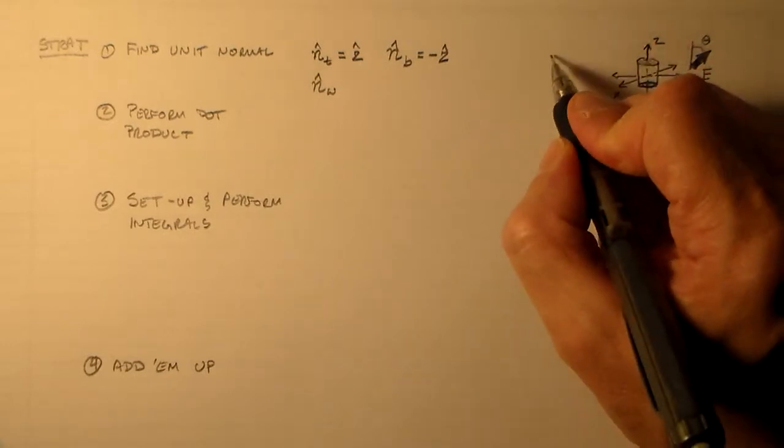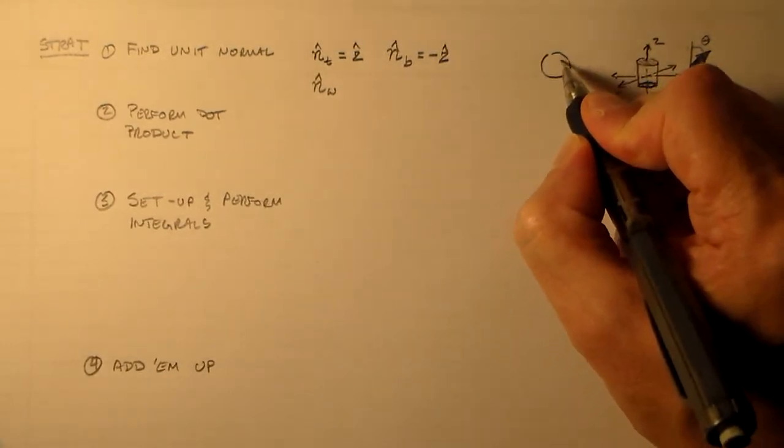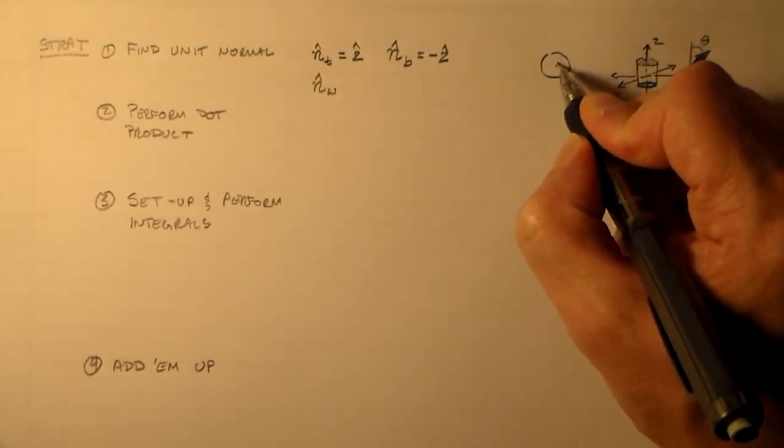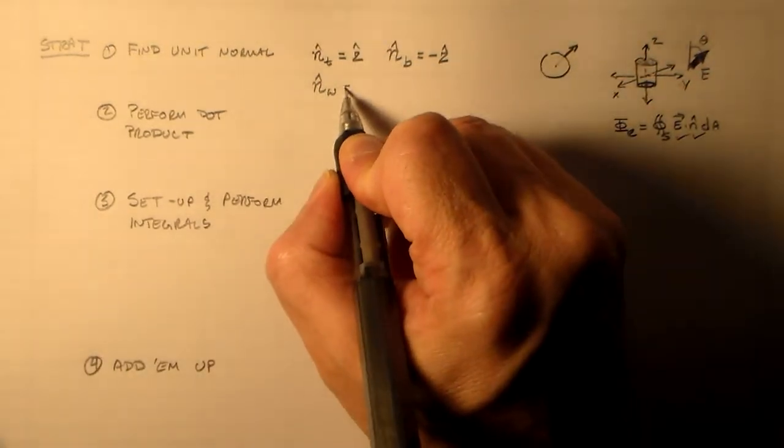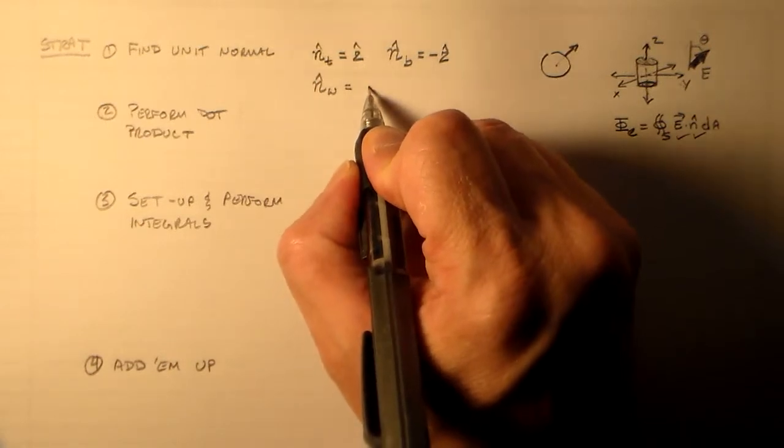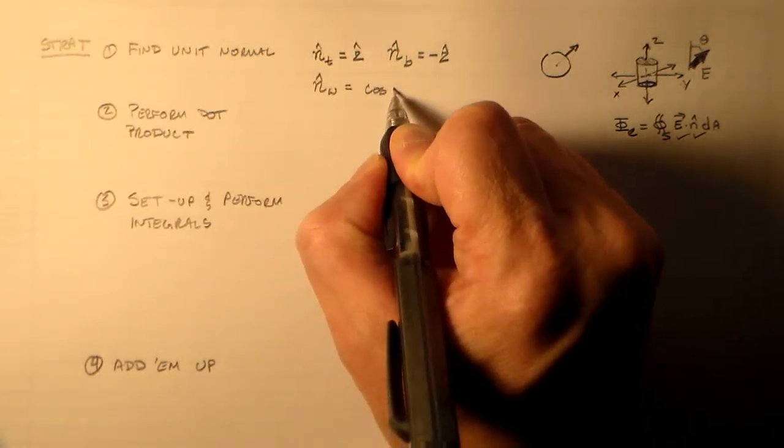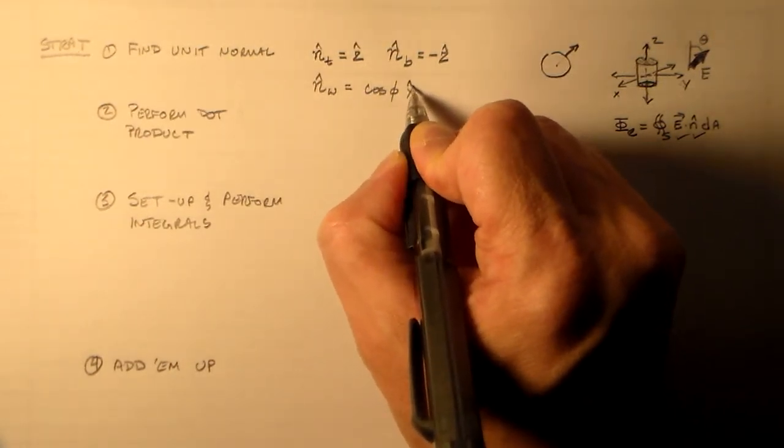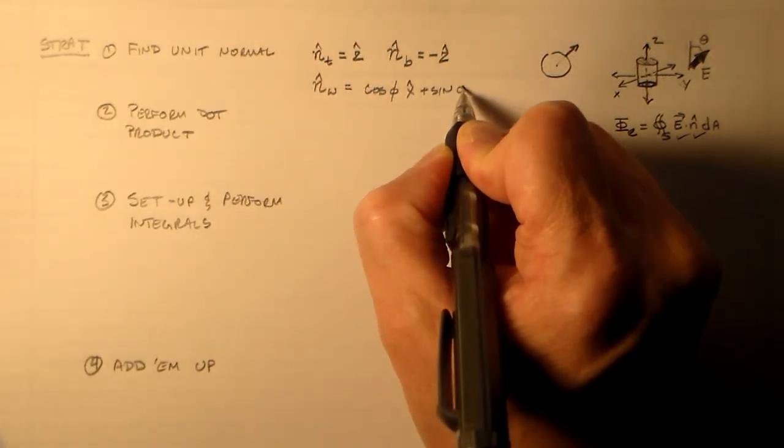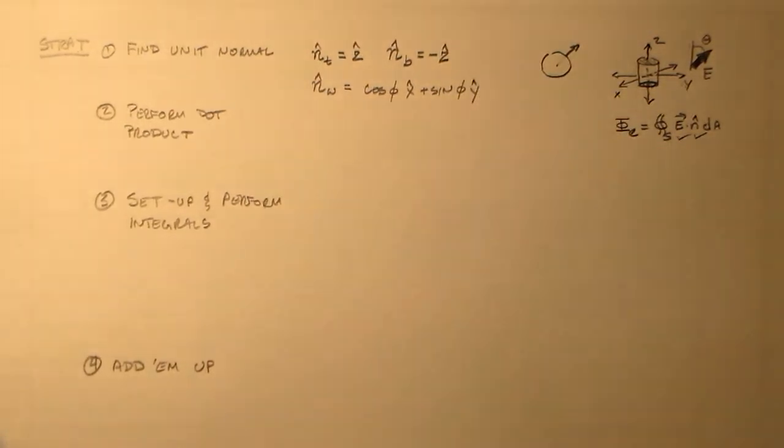And the final part is the unit normal for the wall. Well, the wall is just like a circle here, right? And which way is pointing out of the circle? Well, it's in the radial direction. So the radial direction is cosine phi x-hat plus sine phi y-hat. It's the same one. It's always been the same radial direction you've been using for two or three years.